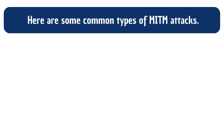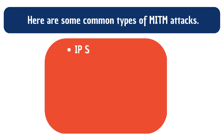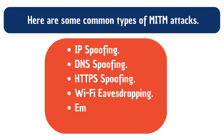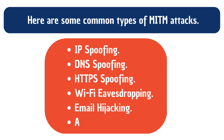Here are some common types of MITM attacks: IP spoofing, DNS spoofing, HTTPS spoofing, Wi-Fi eavesdropping, email hijacking, and ARP poisoning. Now let's review some of these attacks in more detail.